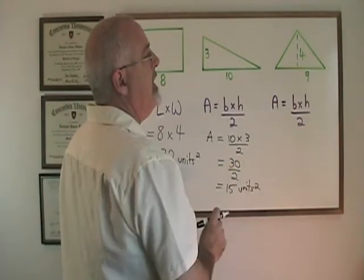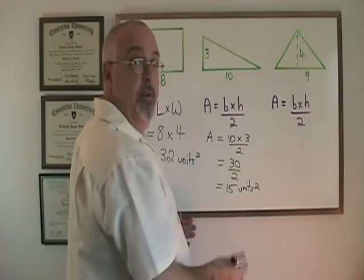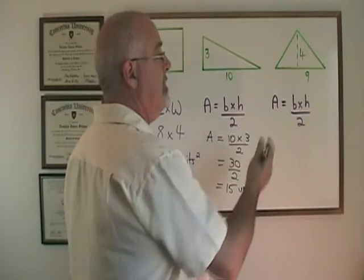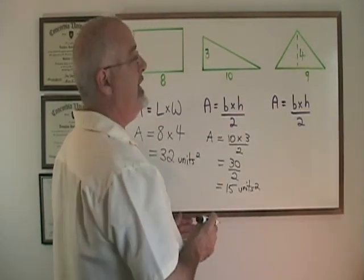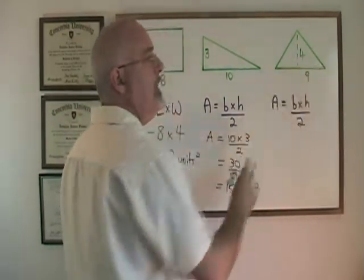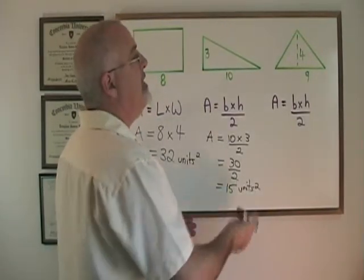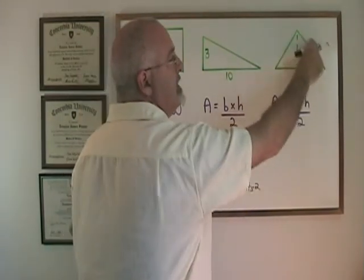In this problem, we are again finding the area of a triangle. We still need our base times height over 2 but we have to be careful. The base can be said to be this side 9 in length but this is not the height, this is not the height.